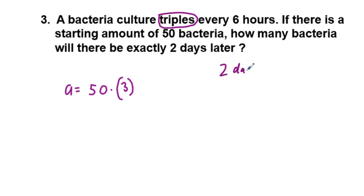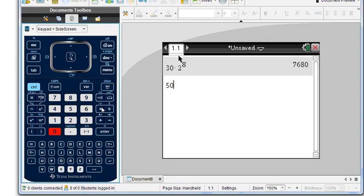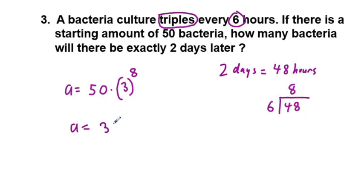To define n, we have two days, and two days is how many hours? Well that's 48 hours. To find the period we take that 48 hours, and we have every 6 hours, so we divide the 48 by 6 and we get 8. So we get 50 times 3 to the 8th power. We go back to our calculator, 50 times 3 to the power of 8, and we get 328,050 bacteria.